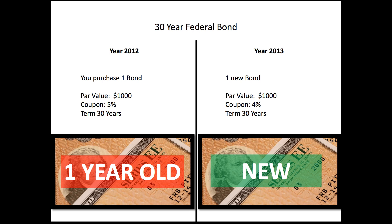Let's see what happens to that bond and figure out what the market price is going to do one year later as interest rates change. We're holding our 5% bond, it's one year later, and interest rates have dropped to 4%. The Federal Reserve is now issuing a $1,000 bond with a term of 30 years at a 4% coupon. So what is the value of the bond we're holding? We have the more valuable asset, but there's only 29 years until it matures.